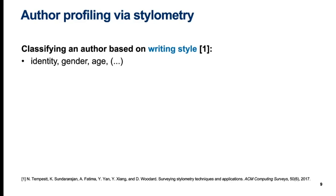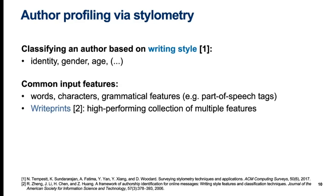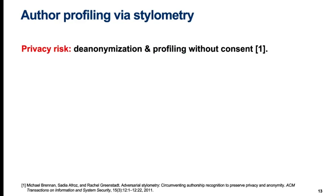Starting from the problem statement, stylometry can be used to identify authors by writing style or profile them based on some property like gender or age. Features typically include word or character n-grams or grammatical features such as those pooled under the WritePrints group. The availability of these stylometry techniques allows an adversary to use them for de-anonymization or profiling of deliberately anonymous authors with potentially harmful or even dangerous consequences to these authors.